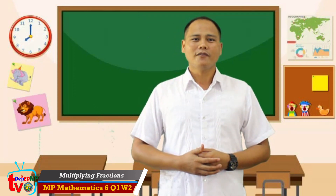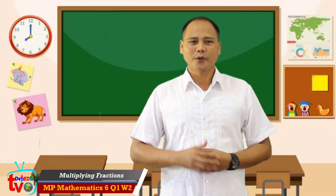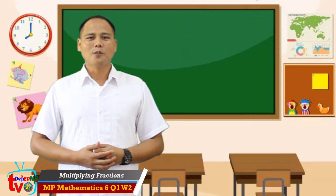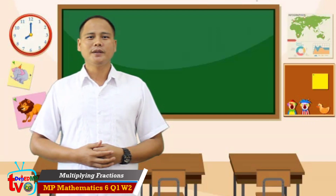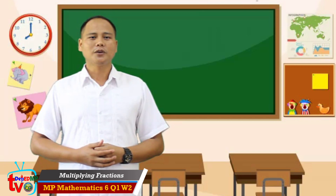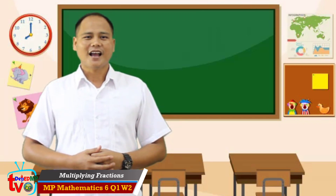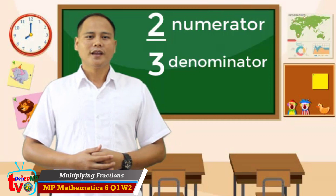But before that, let's have a review first about fractions. Are you ready? Fractions are composed of two parts: the numerator and the denominator. The numerator is the upper number and the denominator is the lower number. An example of a fraction is two-thirds, wherein 2 is the numerator and 3 is the denominator.